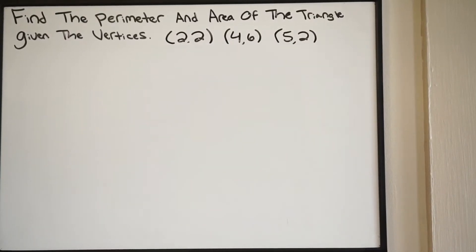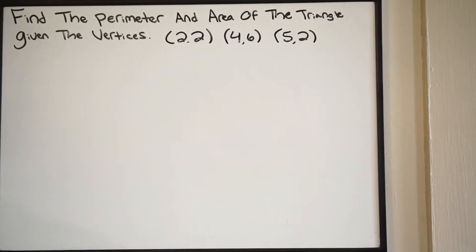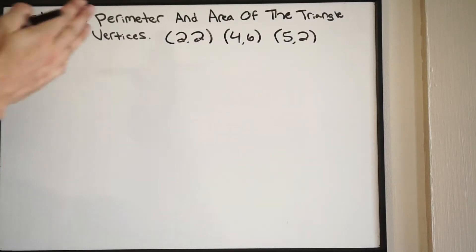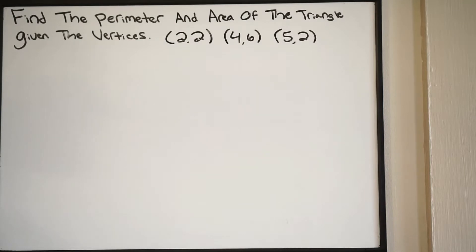In this example we're being asked to find the perimeter and area of the triangle given the vertices. Let's talk about how we're going to do this. Before we start, it may be useful to go ahead and draw this triangle out in space so we can get a better representation of what our triangle actually looks like. So I'm just going to go ahead and plot these vertex points out in space.